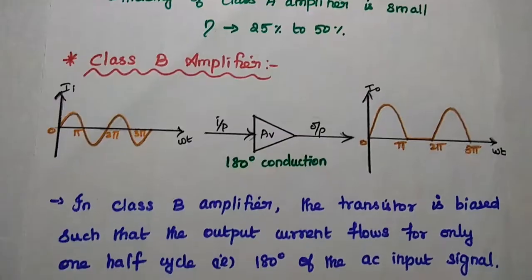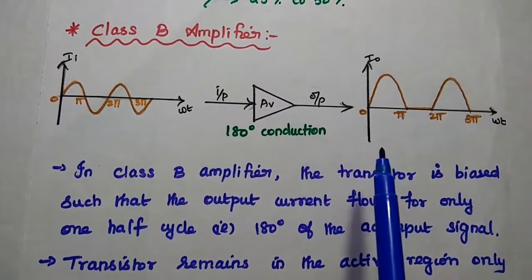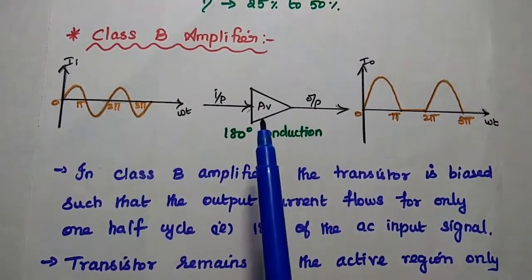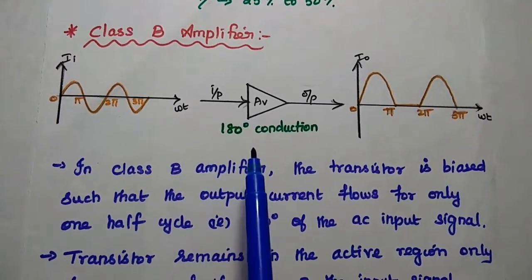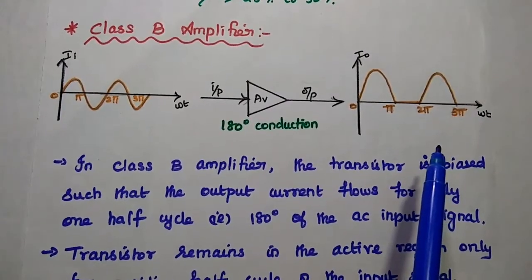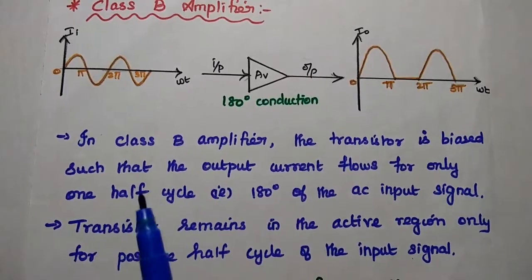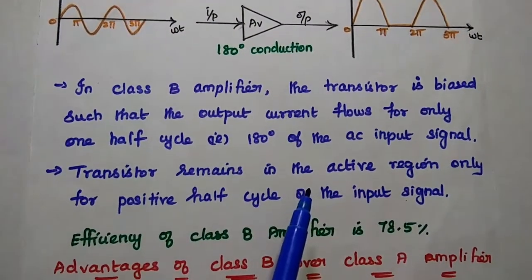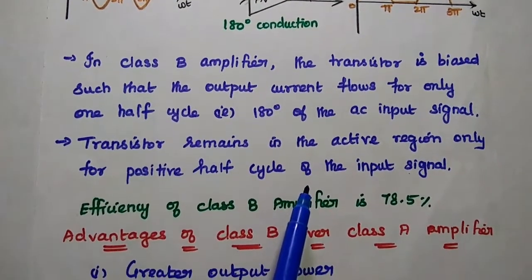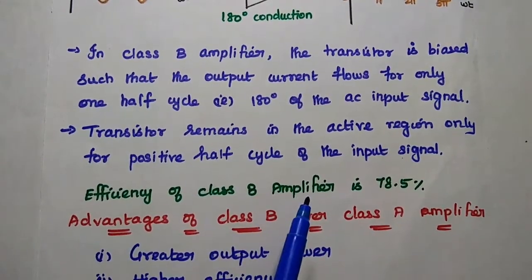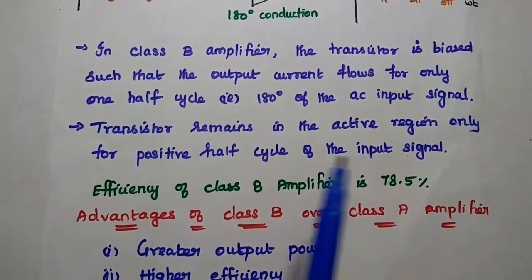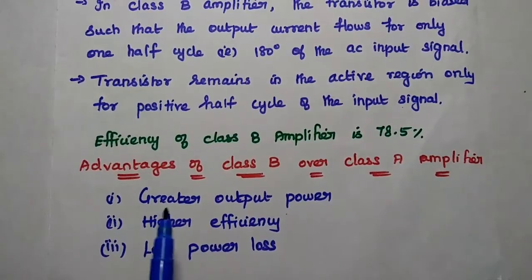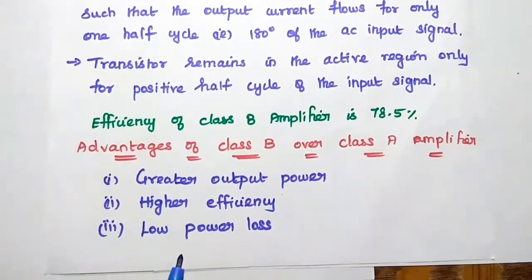Next, class B amplifier. In this class B amplifier, the transistor is in the active region for only half of the AC input signal. This class B amplifier conducts only for 180 degrees, so we can get half of the signal as output. The transistor is biased such that the output current flows only for half cycle of the AC input signal, remaining in the active region only for the positive half cycle. Distortion may be present. The efficiency of class B amplifier is 78.5%, which is greater than class A. The major advantages over class A are greater output power, higher efficiency, and less power loss.